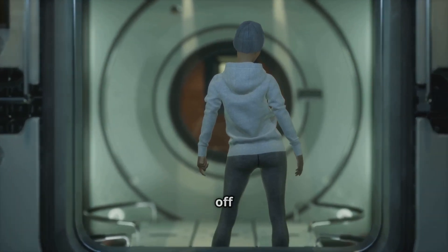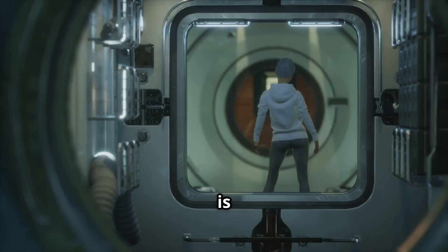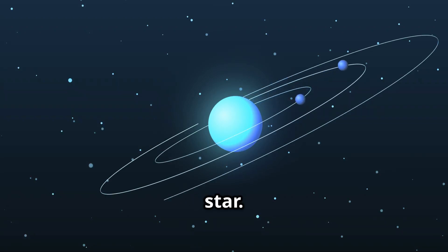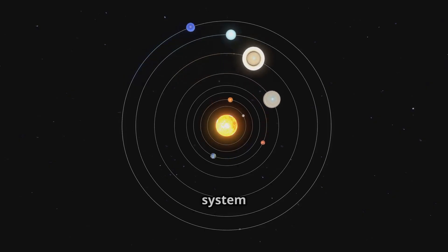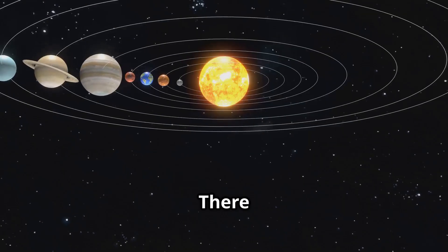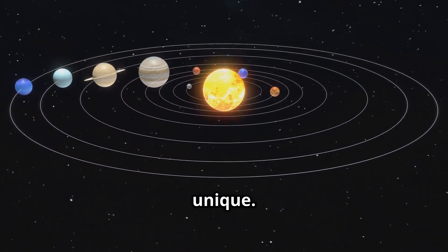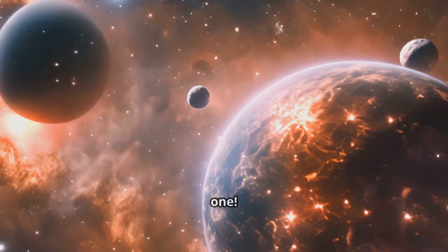Before we blast off to the planets, what is a planet? Planets are big, round objects that orbit a star. In our case, all the planets in our solar system orbit the sun. There are 8 planets in our solar system, and each one is unique. Let's explore them one by one.